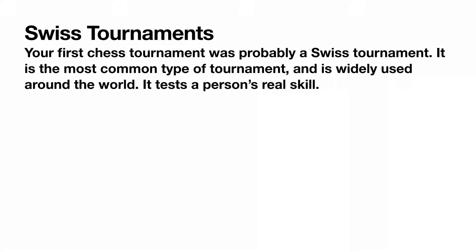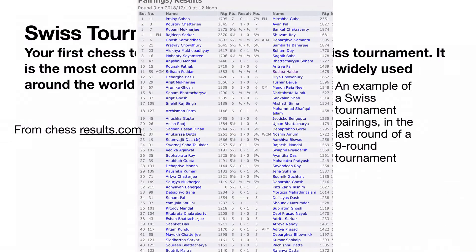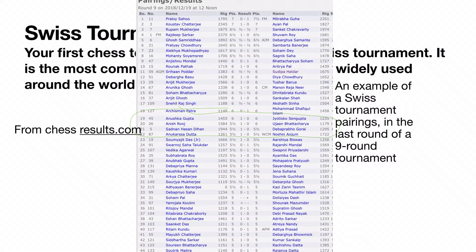Here is an example of a Swiss tournament pairing. You can see that the pairings are based on the total points in the tournament so far. However, sometimes — like on board 20 — there are no other pairs that can be made, and if there are two players that have already played against each other, they can't be paired again. The pairings are determined by the number of points, and whoever has the most points at the end wins the tournament.